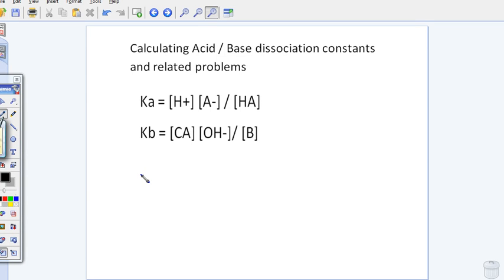Let's look at how to calculate acid-base dissociation constants. The first thing you need to know is that there are two formulas: one for acids and one for bases.